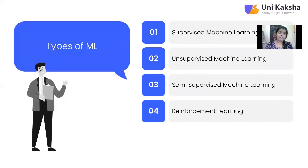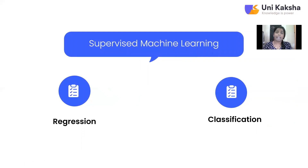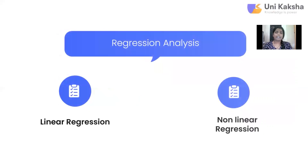These are the types of machine learning algorithms. The current topic, linear regression, comes under the supervised machine learning technique. In supervised machine learning, there are basically two types: regression and classification. Whenever it comes to regression, the output variable is continuous in nature. Whenever it comes to classification, the output variable is categorical in nature. For linear regression, as it is a type of regression, it is going to have supervised data with input and output variables, and the output variable is going to be continuous or numerical in nature.